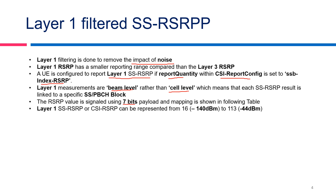At layer 1, SS-RSRP or CSI-RSRP can be represented by values from 16 to 130. The value 16 represents a measured value of minus 140 dBm, and 113 represents a measured RSRP value of minus 44 dBm.